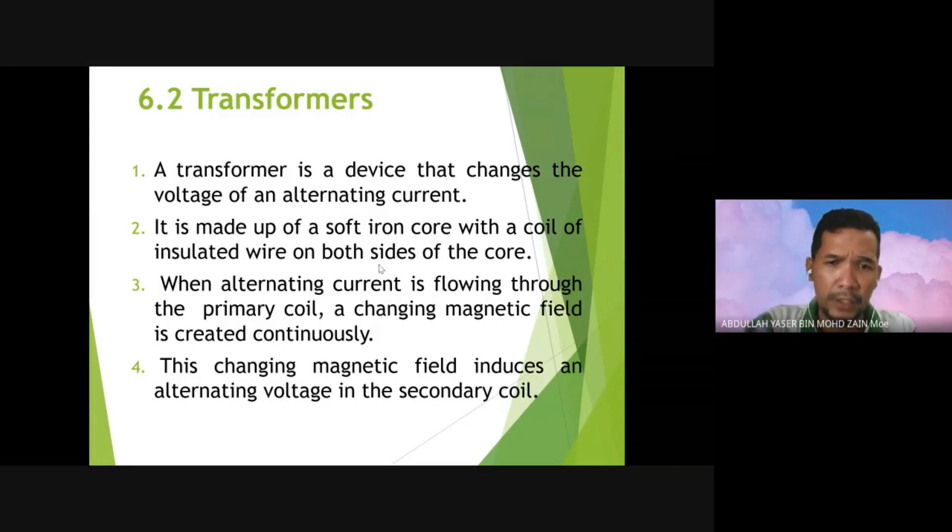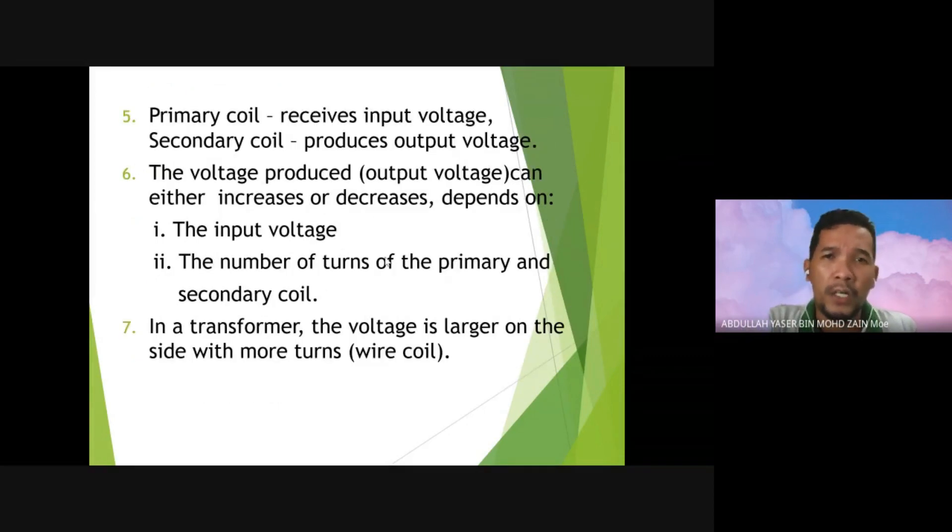We have primary and secondary coils. The primary coil receives input voltage and the secondary coil produces output voltage. The voltage produced, or output voltage, can either increase or decrease depending on the input voltage or the number of turns of the primary and secondary coil. In the transformer, the voltage is larger on the side with more turns.